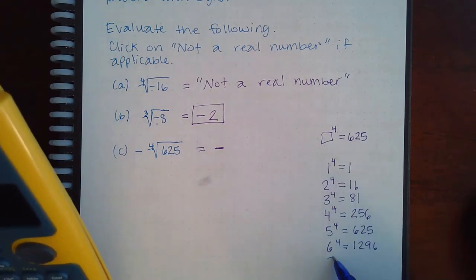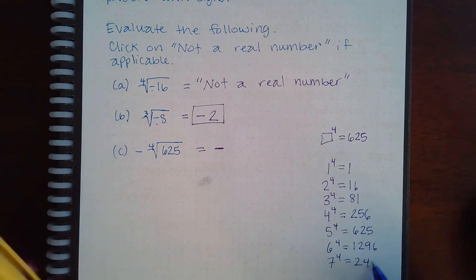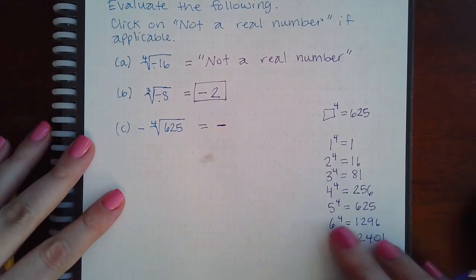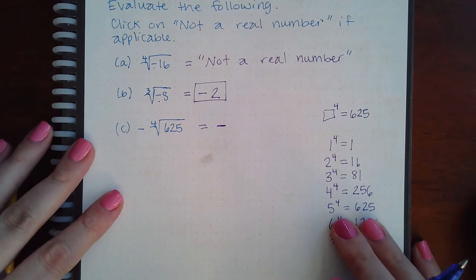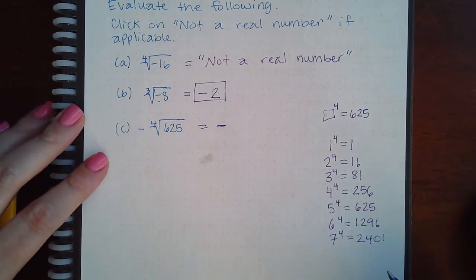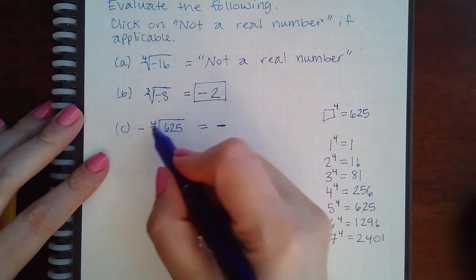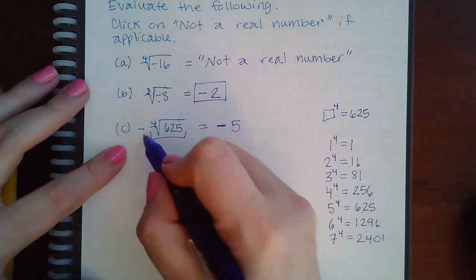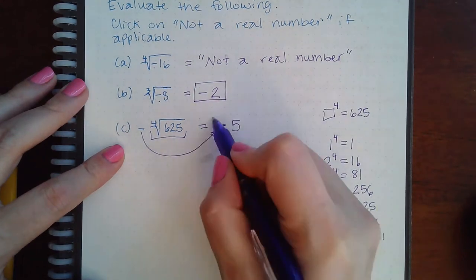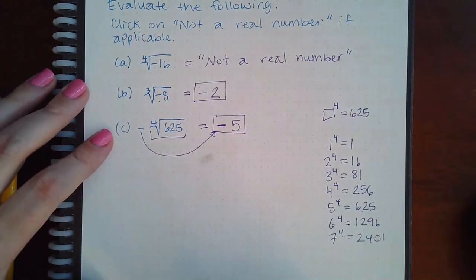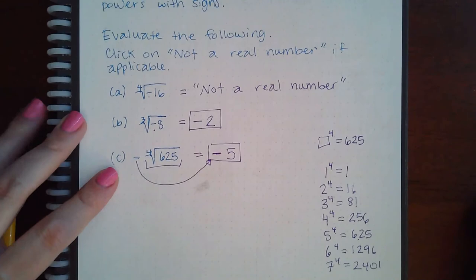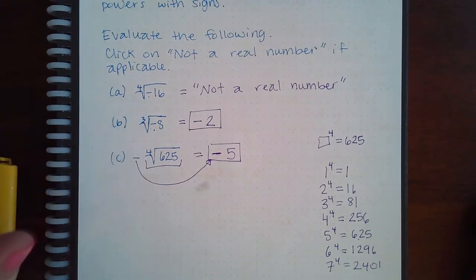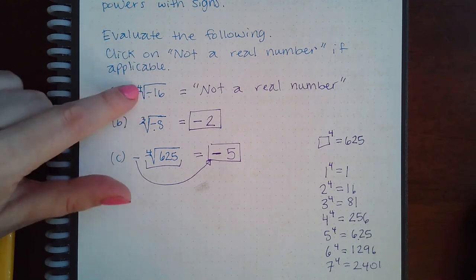They don't usually go this high, so knowing one through five is definitely going to be helpful. Obviously five to the fourth is 625, so the fourth root of 625 is 5. But I had to bring this negative over, so the complete response is just negative 5. There's nothing wrong with having the negative outside an even index.